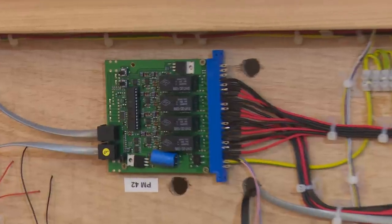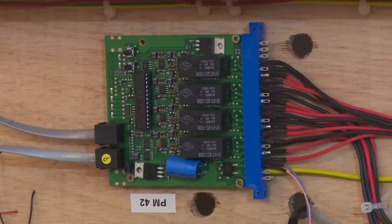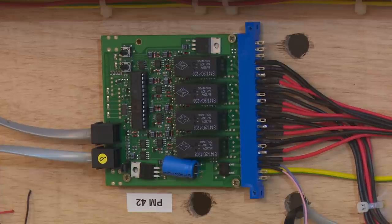And you can see on this PM42 here that there are four relays and it's the bottom three that I'm using to send to the loop track, the loco shed, and to the fuel depot.